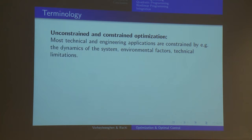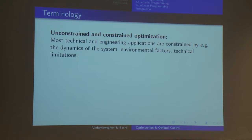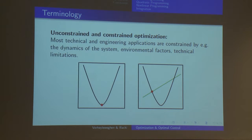Regarding terminology — unconstrained versus constrained optimization. Most technical and engineering applications are constrained by, for example, dynamics of the system, environmental factors, or technical limitations. An example: absolute temperature cannot go below zero Kelvin. Here we see a quadratic objective function; unconstrained, the minimum is at the lowest point. However, if we introduce a constraint — the green line — then the constrained minimum is shifted.